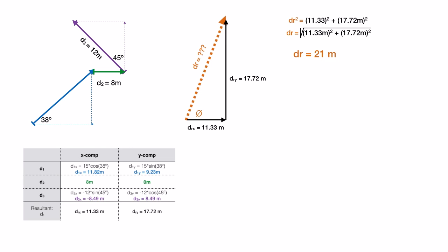In order to get the direction out of this, we need to use trigonometry. I'm going to choose tangent since we have an opposite of 17.72 and an adjacent of 11.33. The tan of theta is opposite over adjacent. Now, you have to remember to get the angle out of that, you need to use an inverse tangent. We put that in and we get a final direction of 57 degrees north of east.